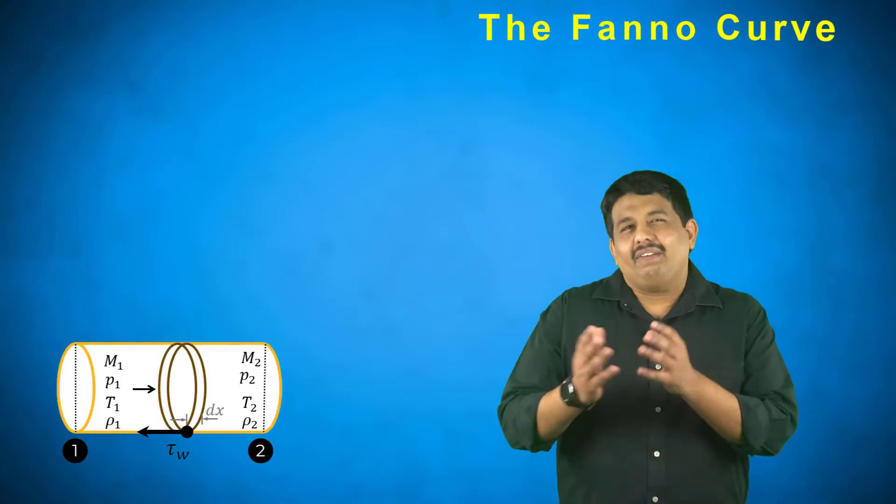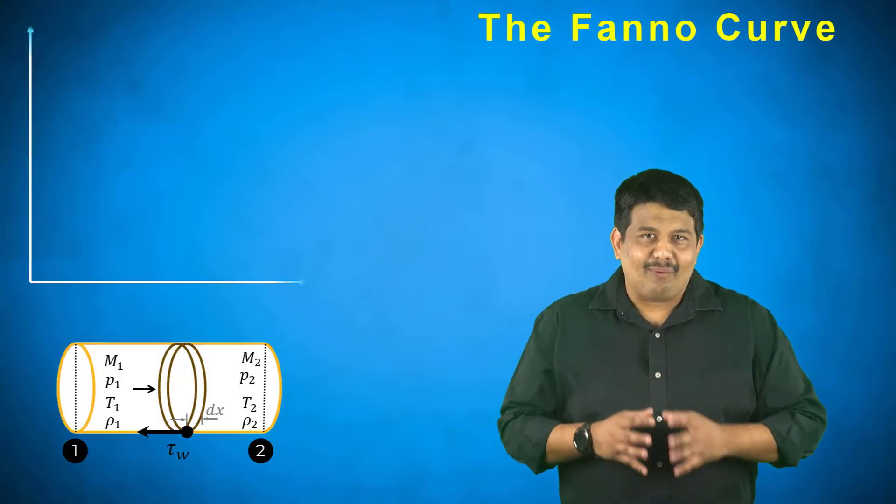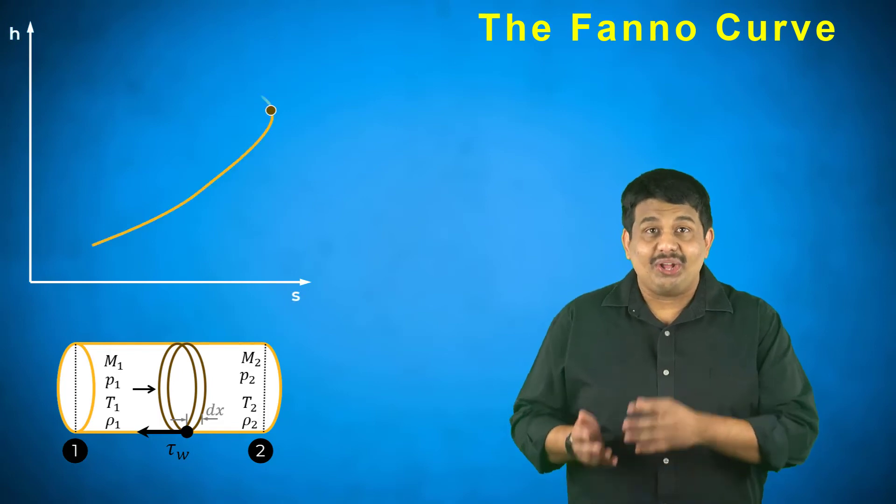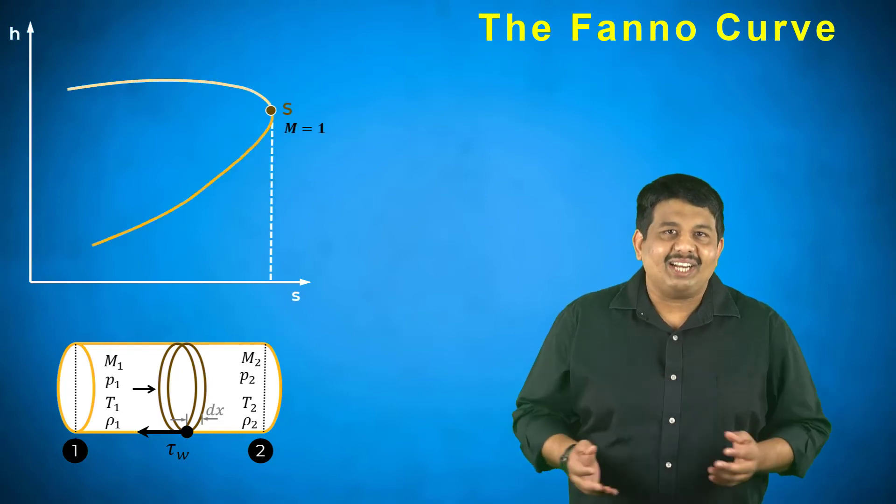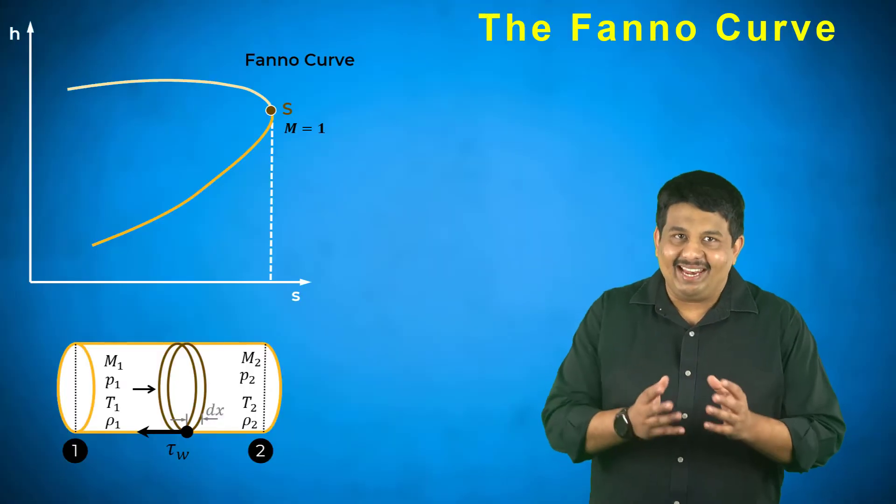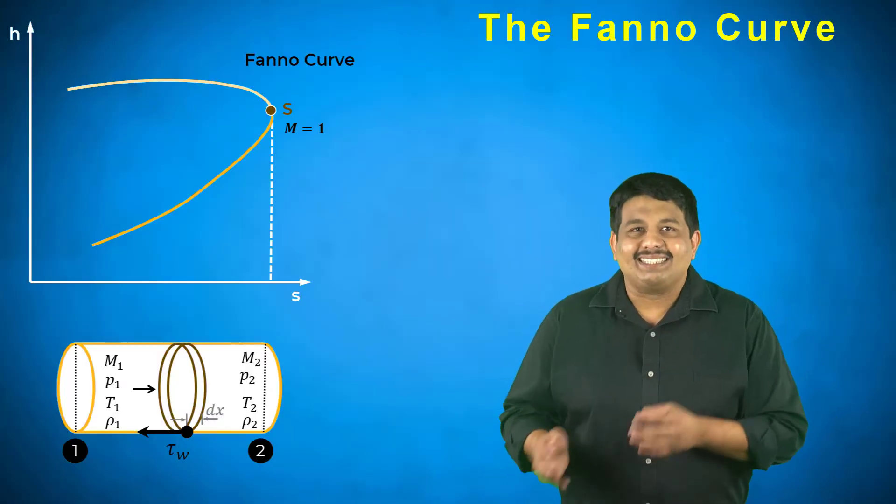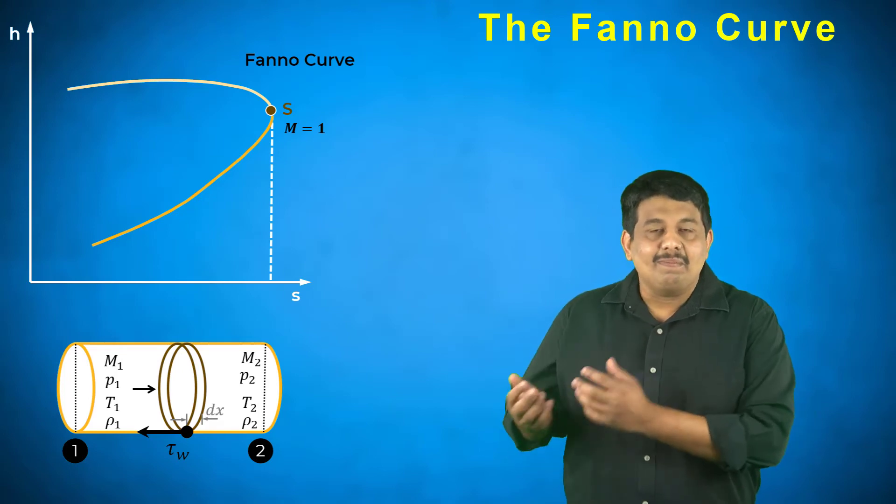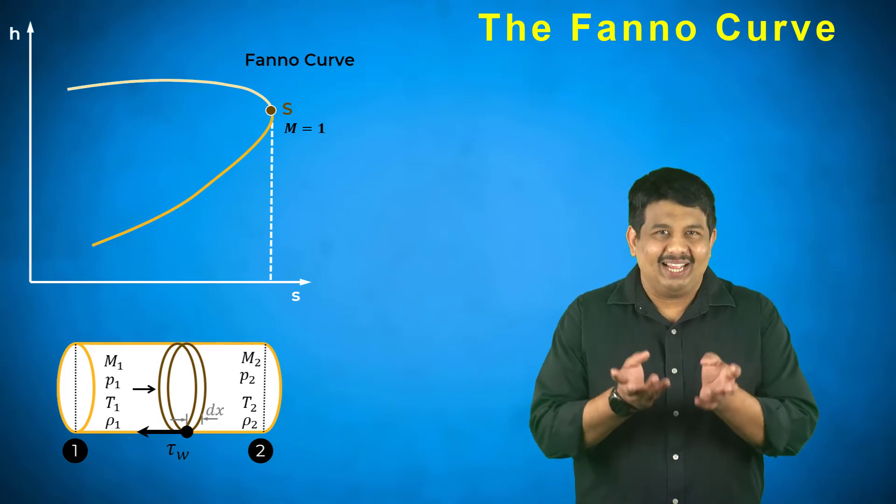Now that we have the necessary relationships, let us understand what happens to the flow properties in the Fanno flow. We will again take the help of a Moeller diagram and draw the Fanno curve for a set of given initial conditions. Like the Rayleigh curve, point S corresponds to maximum entropy where the flow is sonic.